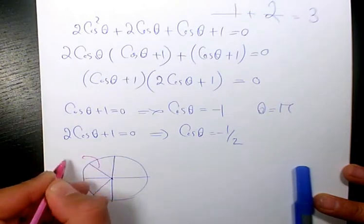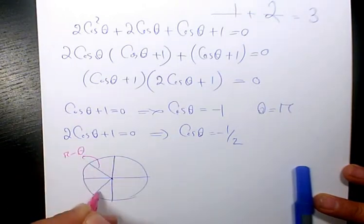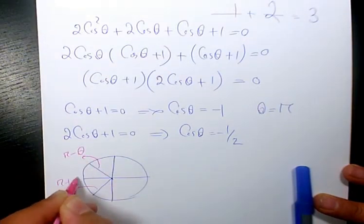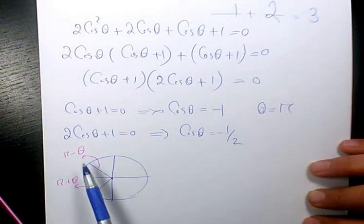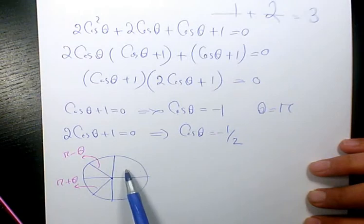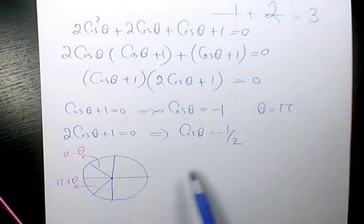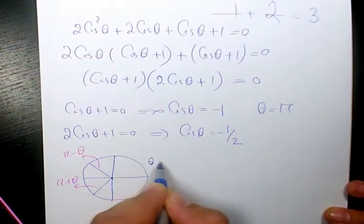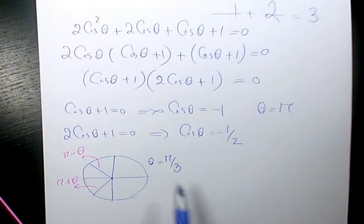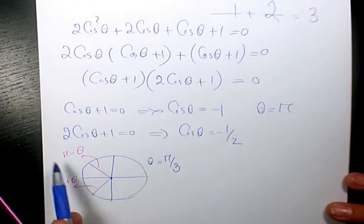That will be pi minus theta. Here, we have pi plus theta. It means that we need to find theta first. So, theta is in quadrant 1, which is 1 over 2. Cosine theta equals to 1 over 2. It means that theta is pi over 3, because cosine pi over 3 is 1 over 2.